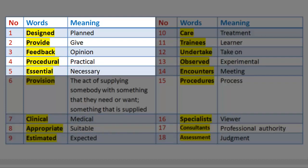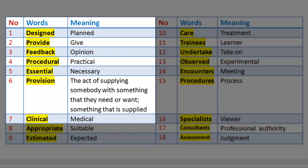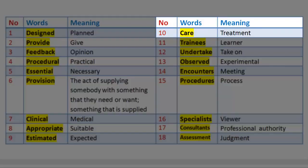Number 6: Provision — meaning the act of supplying somebody with something that they need or want; something that is supplied. Number 7: Clinical — meaning medical. Number 8: Appropriate — meaning suitable. Number 9: Estimated — meaning expected. Number 10: Care — meaning treatment.